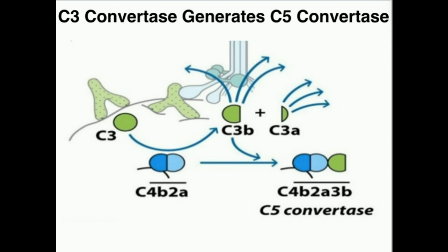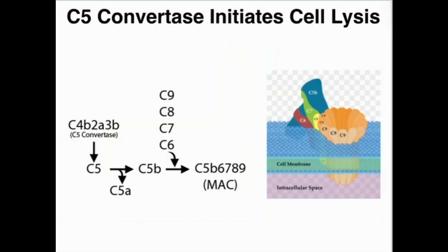When I have bound C4B, C2B, and C3B, they are a C5 convertase. In the same way that a C3 convertase split C3 into C3A and C3B, a C5 convertase splits C5 into C5A and C5B. That C5 convertase — C4B, C2B, C3B — splits C5 into C5A, which floats away, and C5B.